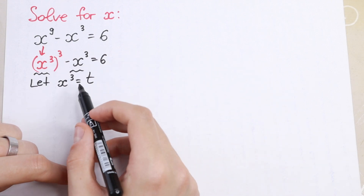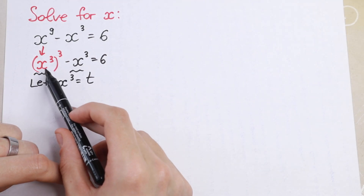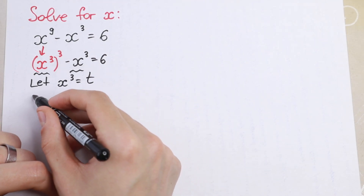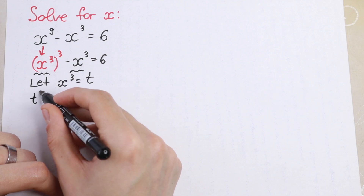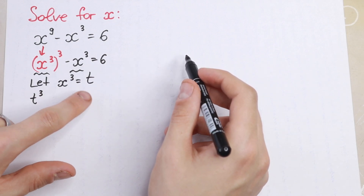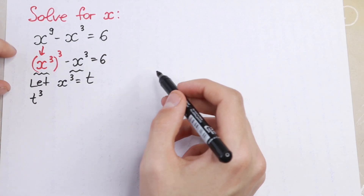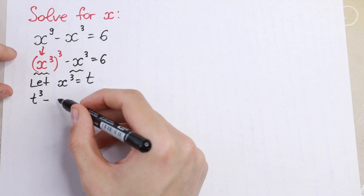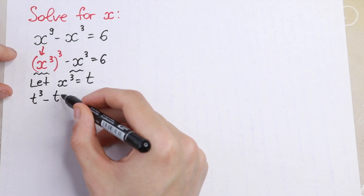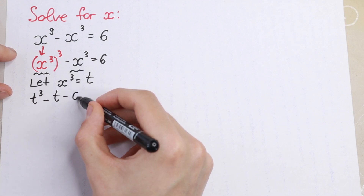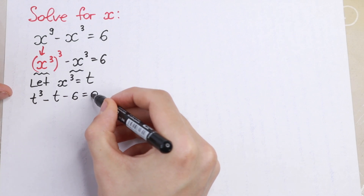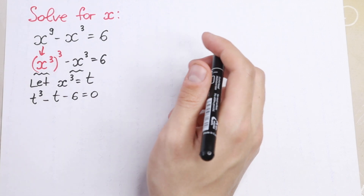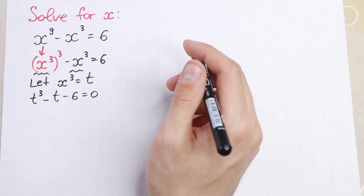So if x cubed equals t, then right here we'll have t cubed. Just plug in x cubed equal to t: we get t cubed minus t minus 6 equal to 0 — I just bring the 6 to the left. So we will have a cubic equation.